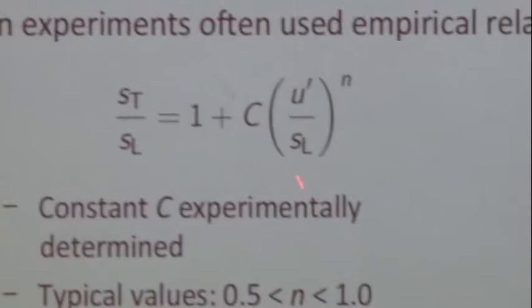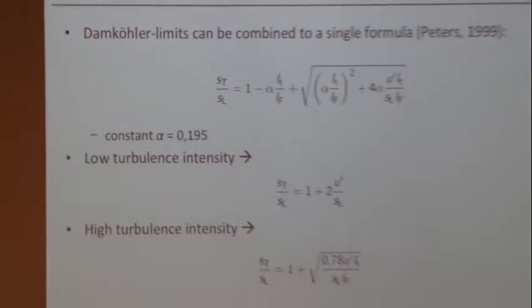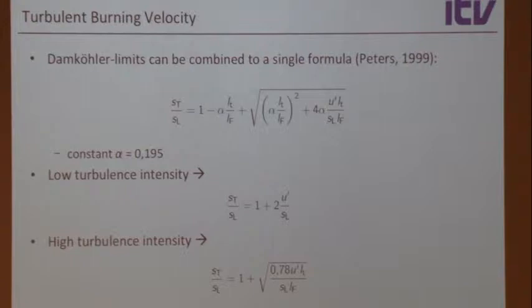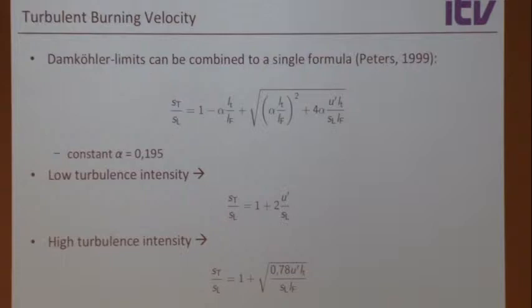You can combine these two limits in one formula — this is Peters' model, a quadratic solution depending on both the length scale ratio and velocity scale ratio. In the limit of large Damköhler number you recover the large-scale limit, and in the limit of small Damköhler number you recover the small-scale limit. This formula recovers both Damköhler's large-scale and small-scale limits.